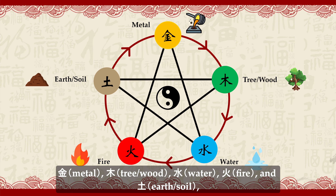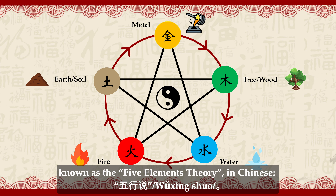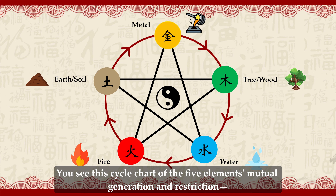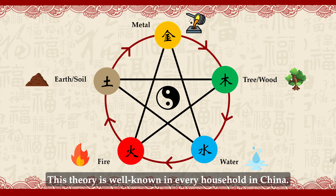These five elements are: Jīn (metal), Mù (tree or wood), Shuǐ (water), Huǒ (fire), and Tǔ (earth or soil) — known as the Five Elements Theory. In Chinese, you see the circle chart of these five elements showing their mutual generation and restriction. It is really beautiful and elegant. This theory is well known in every household in China.